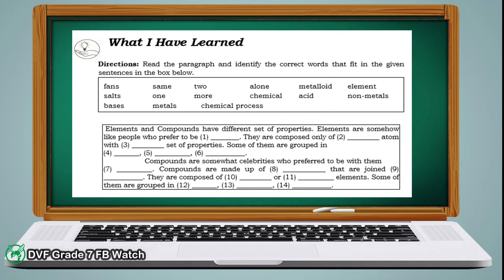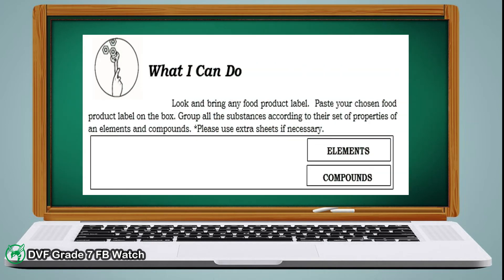Let's proceed with 'What I Have Learned.' You are going to supply the given paragraph with correct words — just choose your answer from the words inside the box. Next, in 'What I Can Do,' look and bring any food product label. Cut out the nutrition facts or ingredients of the food product, then paste it on your paper and group all the substances according to their set of properties of elements and compounds. Write down the elements and compounds found in the food product label.